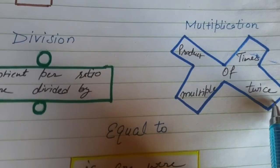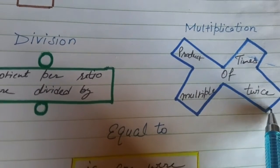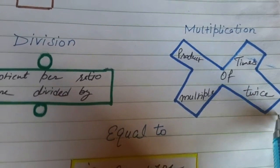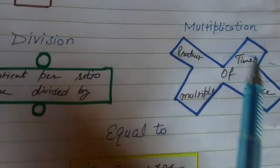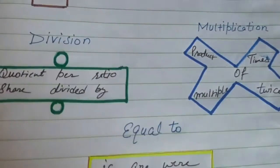It can be twice, thrice, four times. Twice means two times, thrice means three times, four times means four times, and so on. So these are the basic key words for division and multiplication.